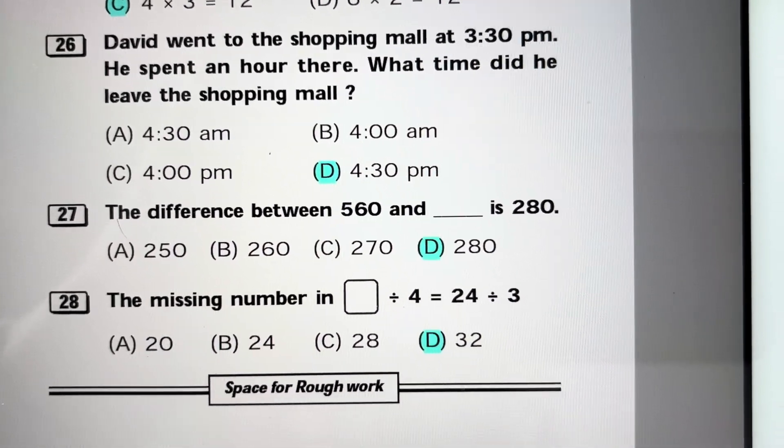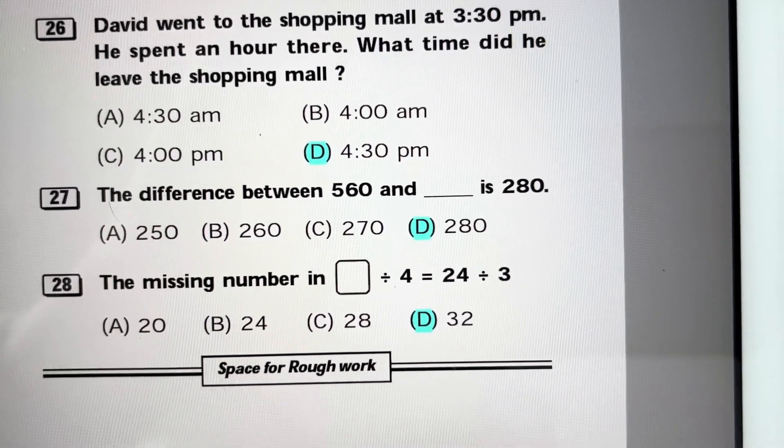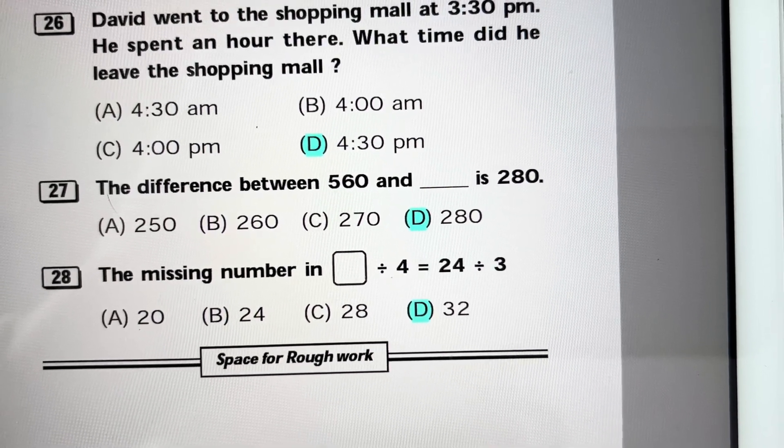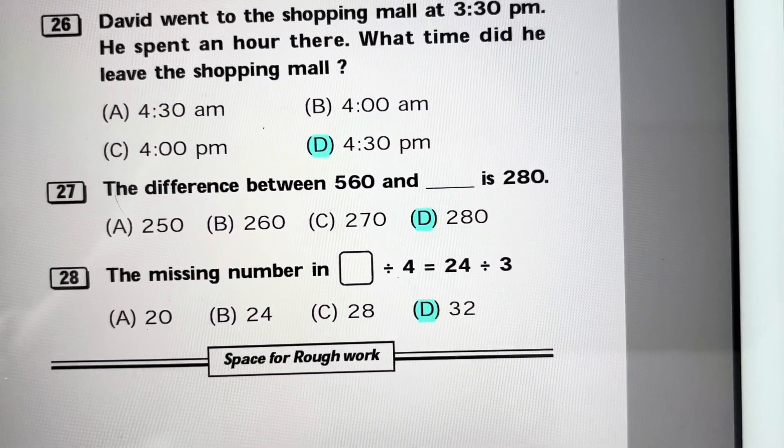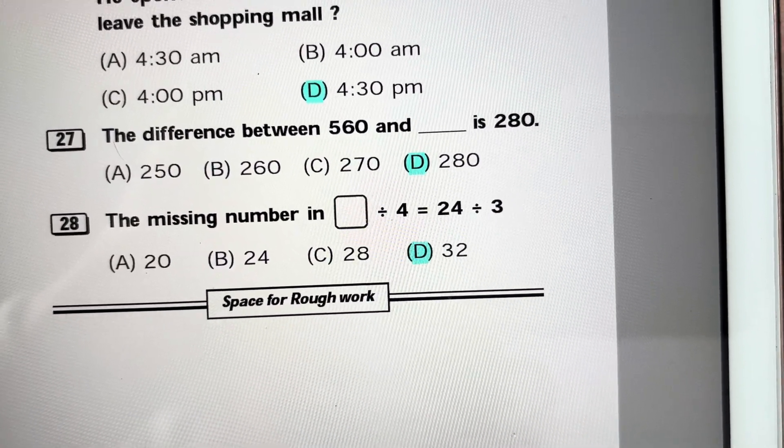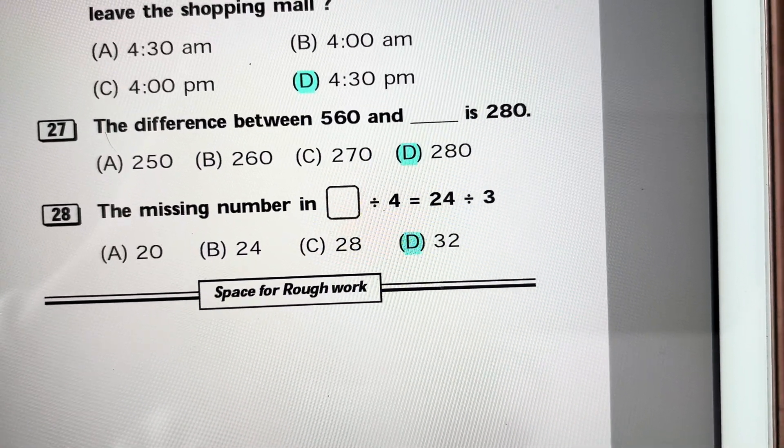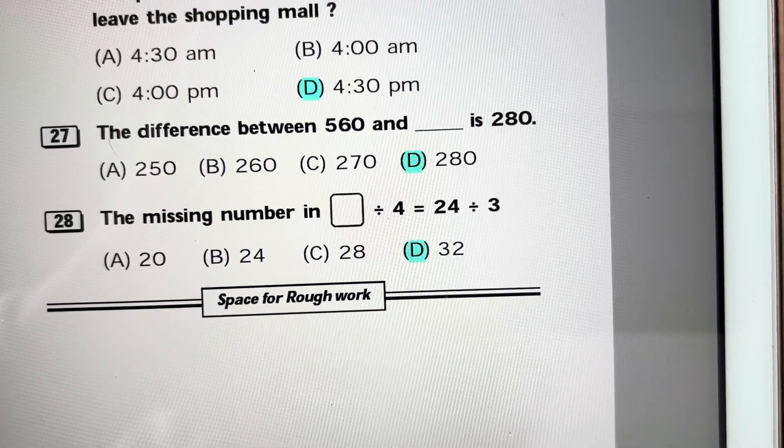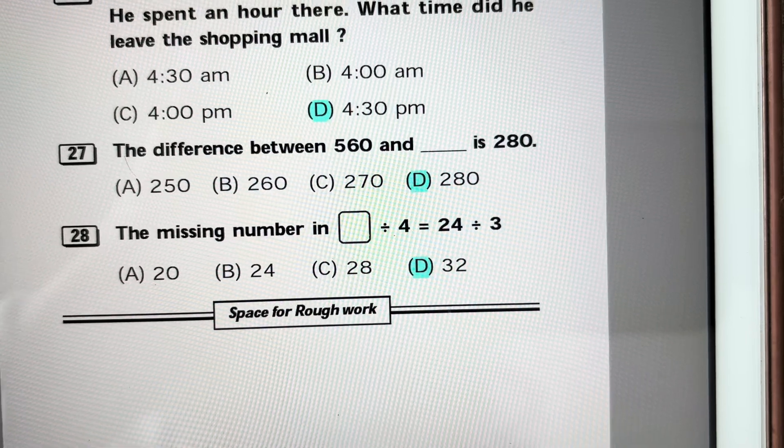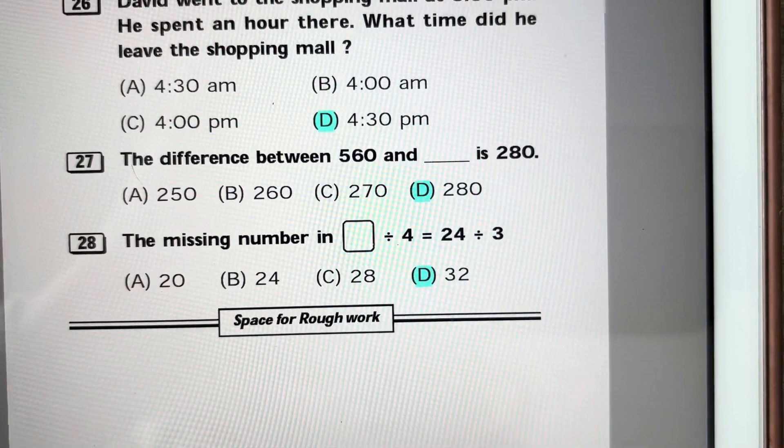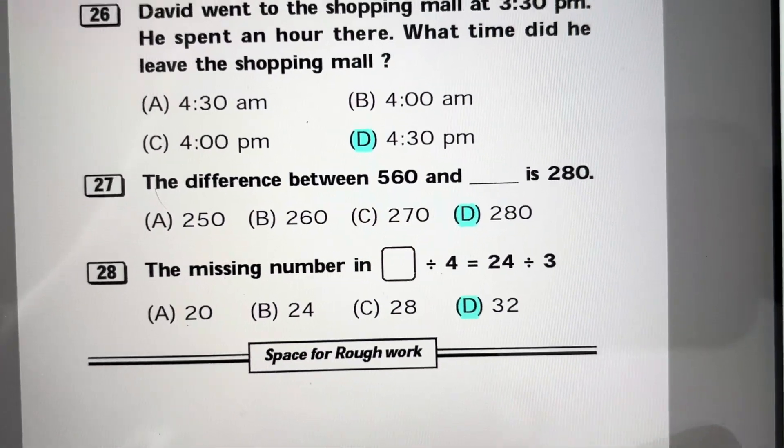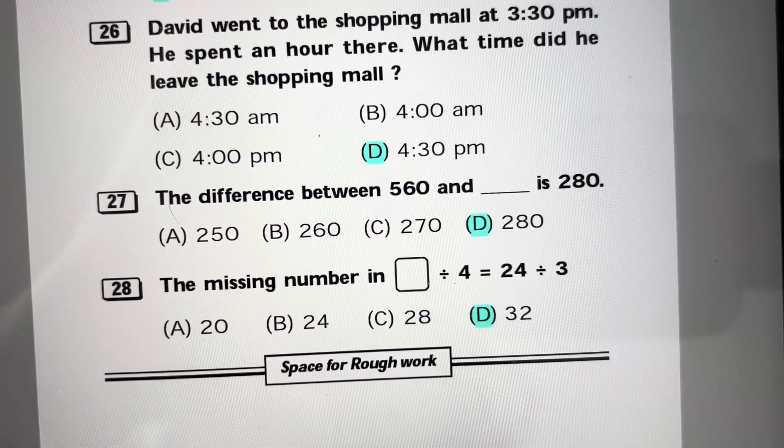Question 27: The difference between 560 and something is 280, so 560 minus 280 is 280. Answer is D. Question 28: The missing number, something divided by 4 equals 24 divided by 3. 24 divided by 3 is 8, so 32 divided by 4 is 8. Answer is 32.